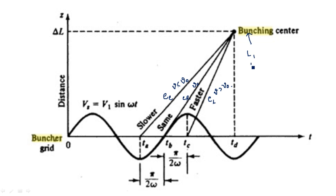After traveling a distance L1 — that is the drift space — the electrons go to where bunching occurs and a bunch is created. The distance between the late electron and the reference electron is taken as pi by 2 omega on the axis of the RF signal. Now let us go to the derivation part.